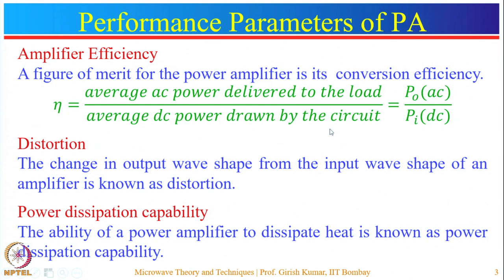Another key consideration is distortion in amplifiers. Depending upon the output current, various types of amplifiers produce various types of waveforms. Distortion is defined as the change in output wave shape from the input wave shape. These distortions could be of various types, such as amplitude distortion, harmonic distortion, and crossover distortion.